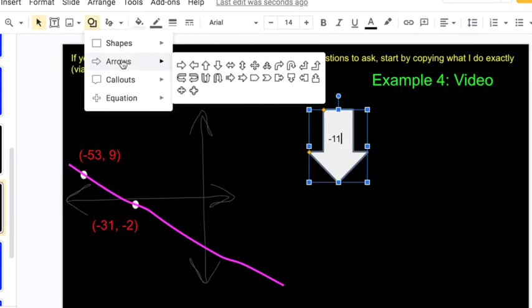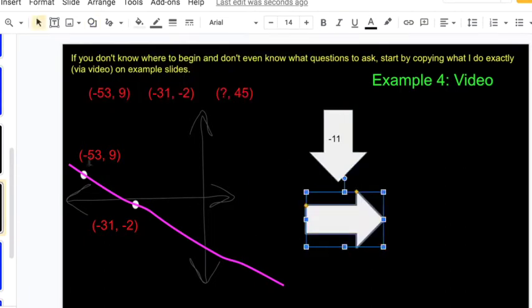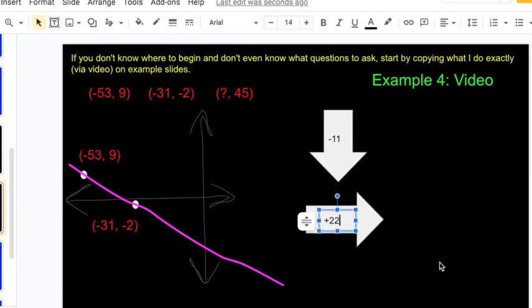And to get from one point to the next, from negative fifty-three forward to negative thirty-one, we're going forward 22. That's convenient.